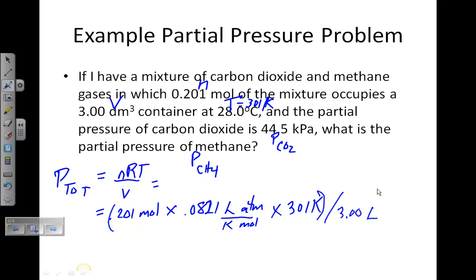What you get is 1.65 atmospheres. Now we have our partial pressure of carbon dioxide, 44.5, which works out if you multiply that by 1 atm over 101.3 kilopascals. That's the conversion factor. You will get 0.439 atmospheres for the partial pressure of carbon dioxide.